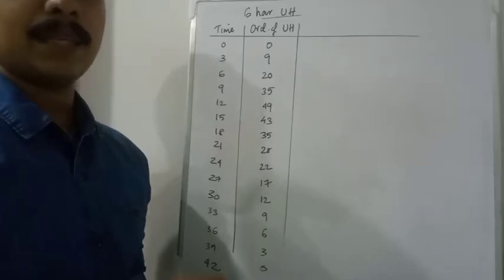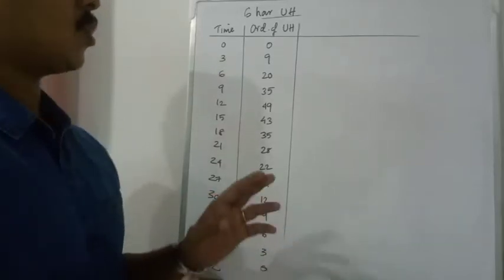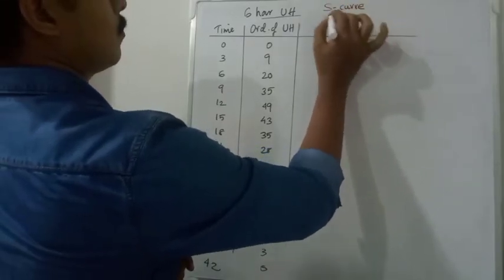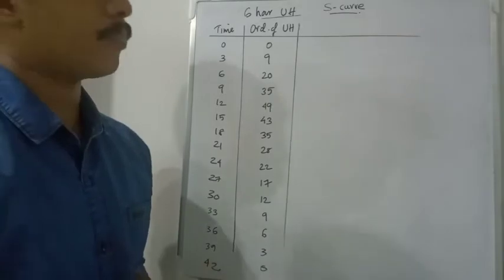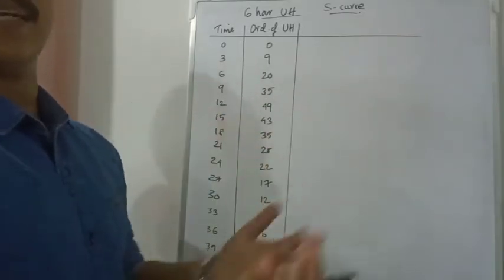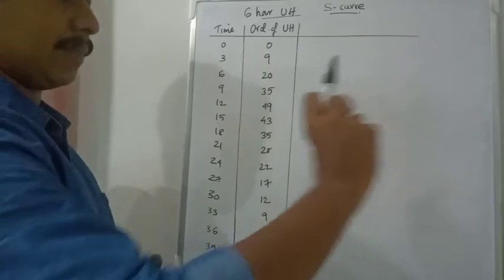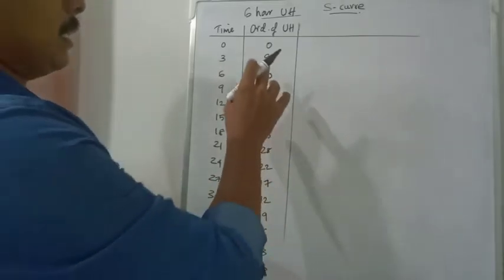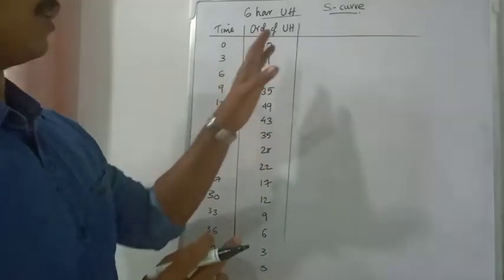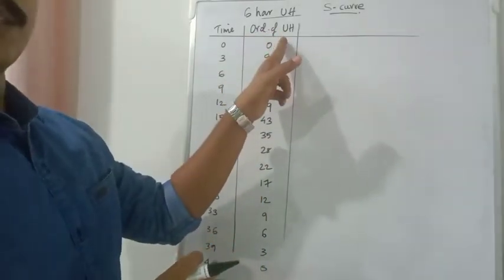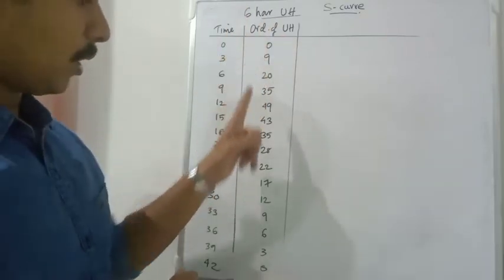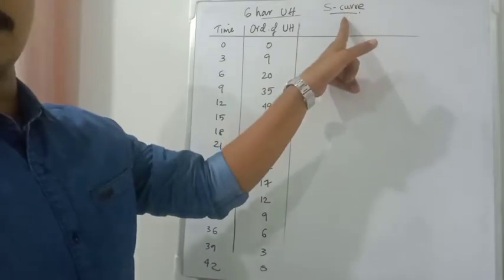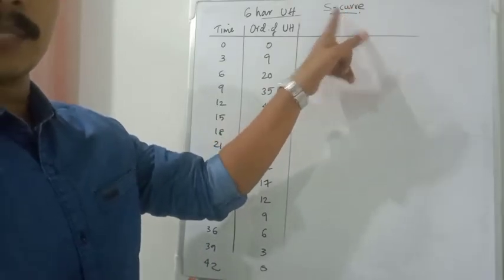Welcome back. Today our topic is construction of S-curve — specifically, how to generate an S-curve. We consider infinite time-lag precipitation into an ideal situation. We have ordinates of a unit hydrograph, and our question is: from these ordinates of the unit hydrograph, how can we generate the ordinates of the S-curve or S-hydrograph?